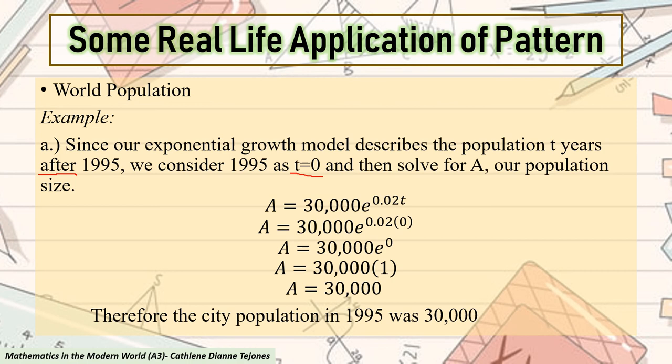Next, we are going to substitute the value of our T. A = 30,000e^(0.02 × 0). We substituted T as 0. As we all know, 0 times 0.02 will be equal to 0. Any number multiplied to 0 is equal to 0. So now, we will have A = 30,000e^0.